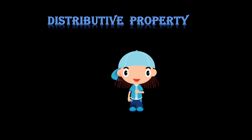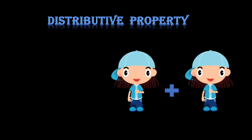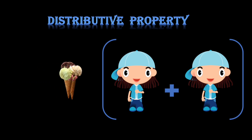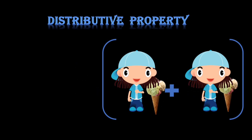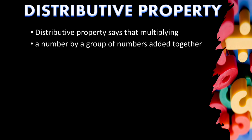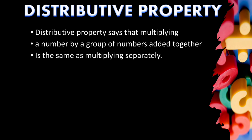Let us now discuss another property — the most important and widely used property — that is distributive property. To understand this property, here is one example: when two children are at home and ice creams are brought, each child gets one. To remember this property, keep that concept in mind. Distributive property says that multiplying a number by a group of numbers added together is the same as multiplying separately.